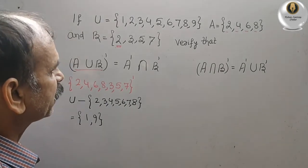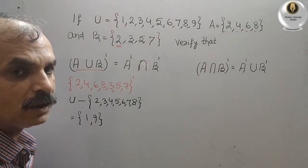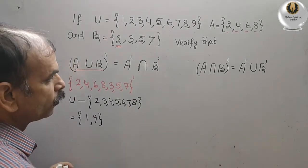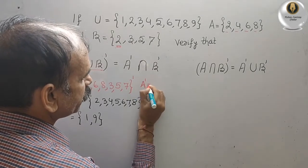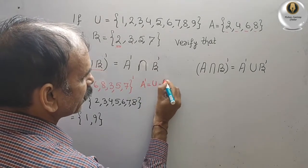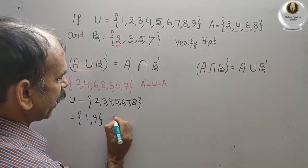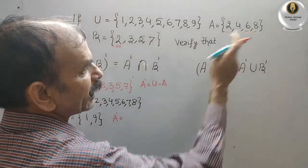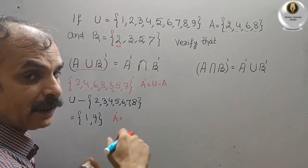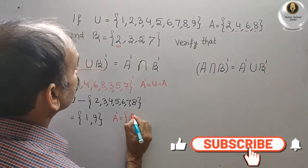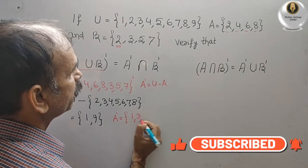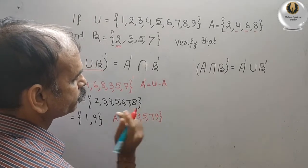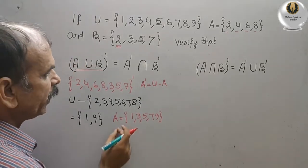Now we will go for RHS. A complement means U minus A. A is {2,4,6,8}, so what is left in U — we will write that only — that is {1,3,5,7,9}. This is your A complement.